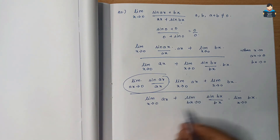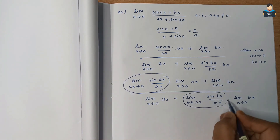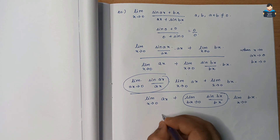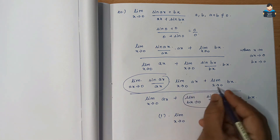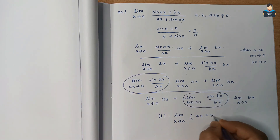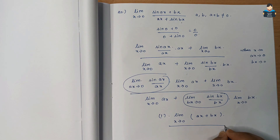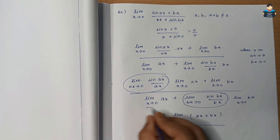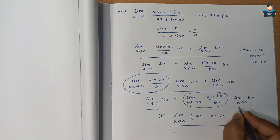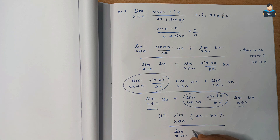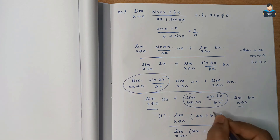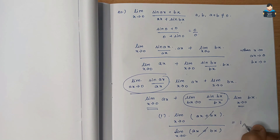The sin(ax)/ax part gives 1, and the sin(bx)/bx part gives 1. So we have 1 × limit x tends to 0 of ax, divided by 1 × limit x tends to 0 of bx. The x terms cancel, giving a/b. After further simplification the result gives 1 as the final answer.